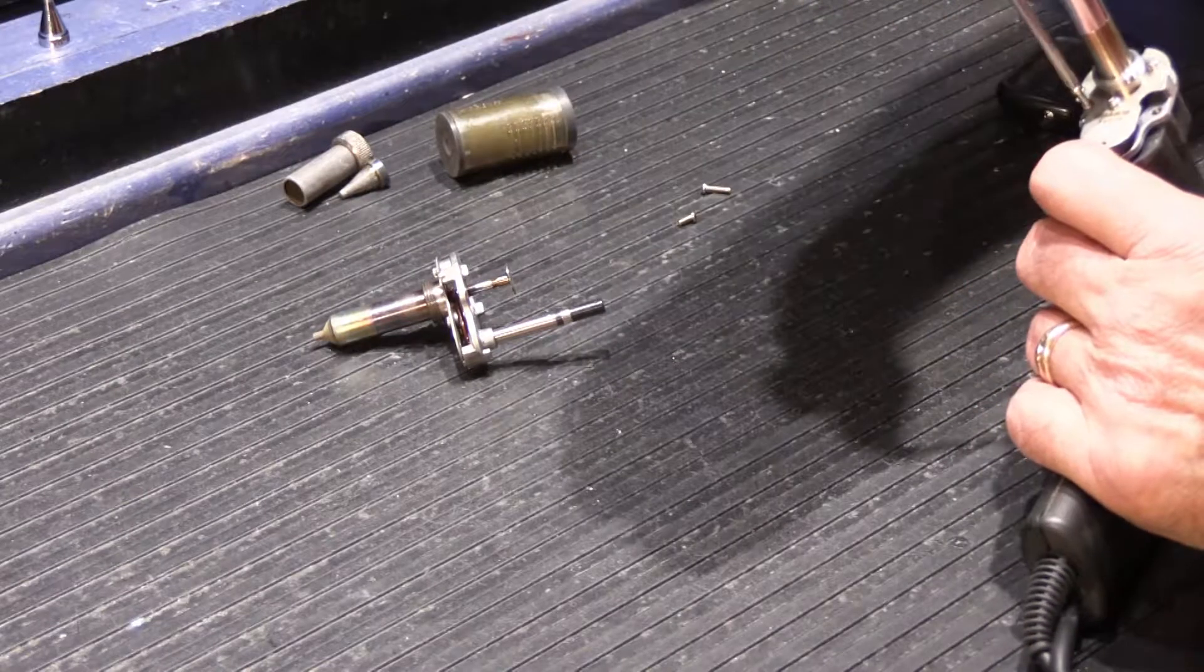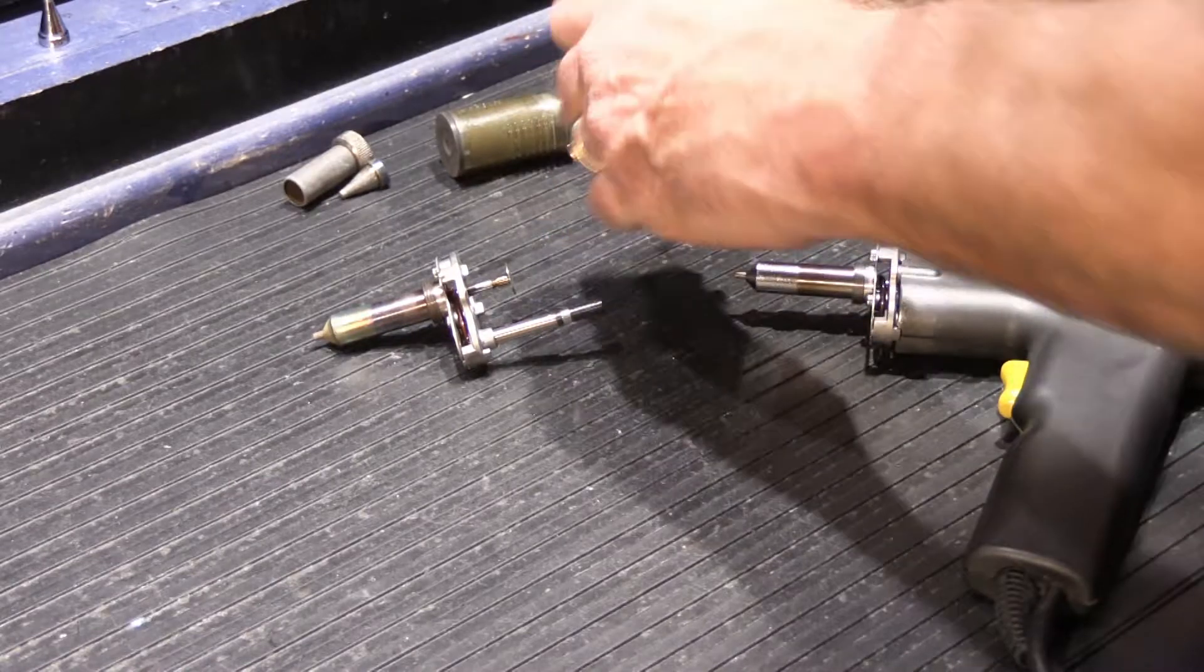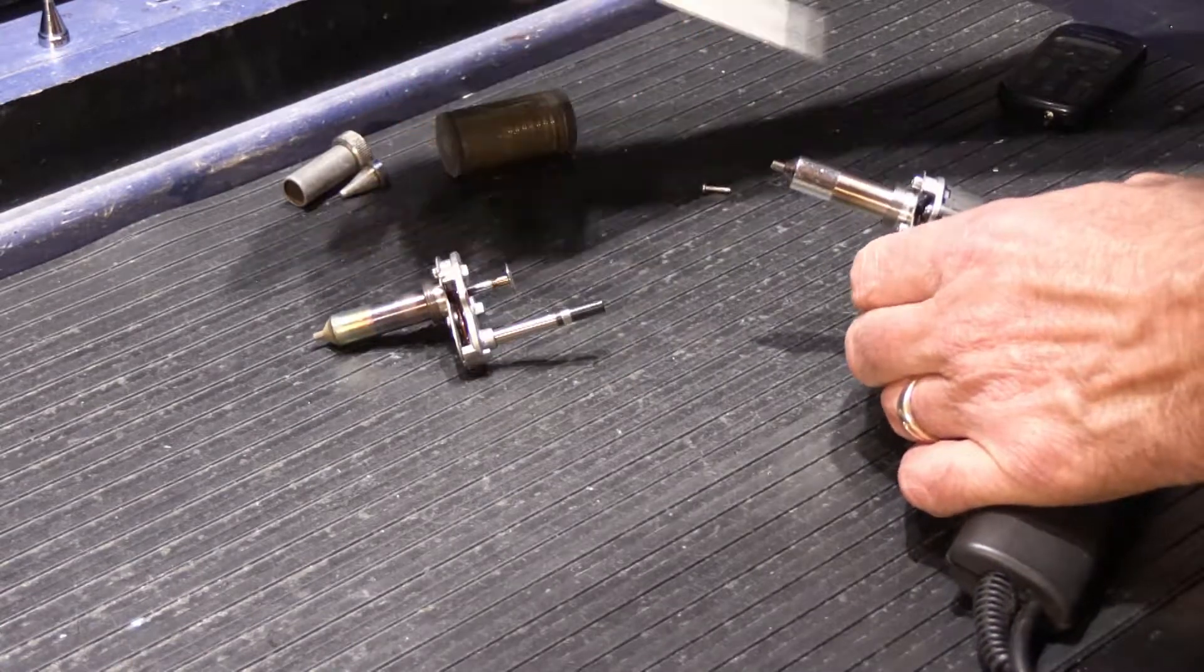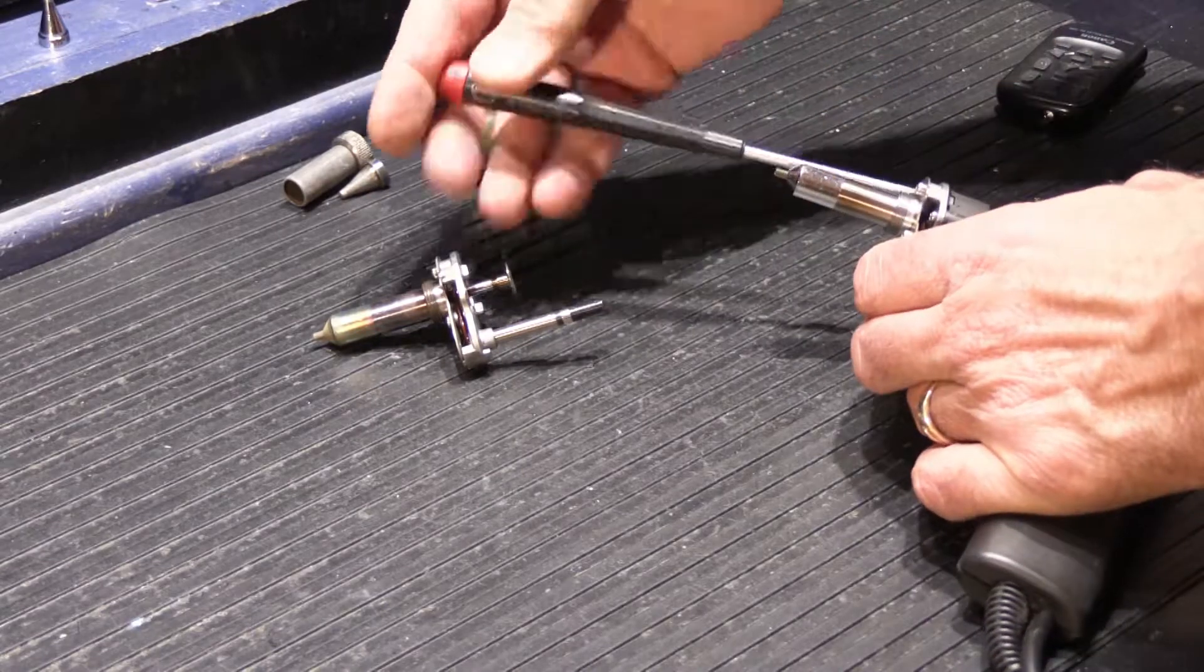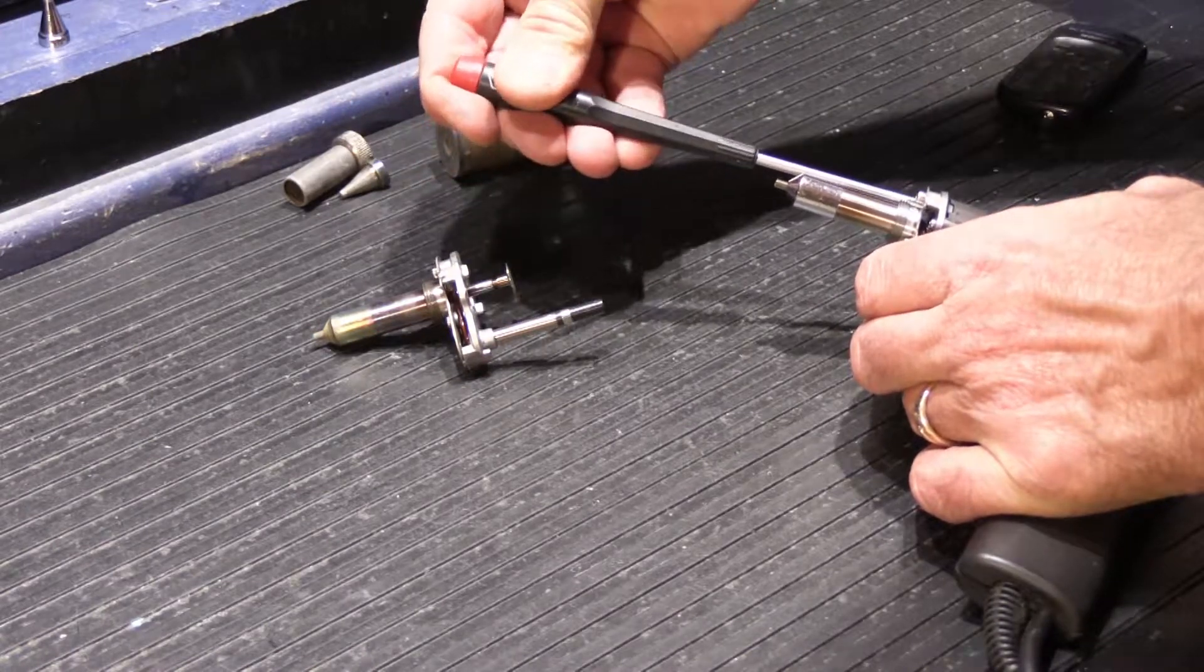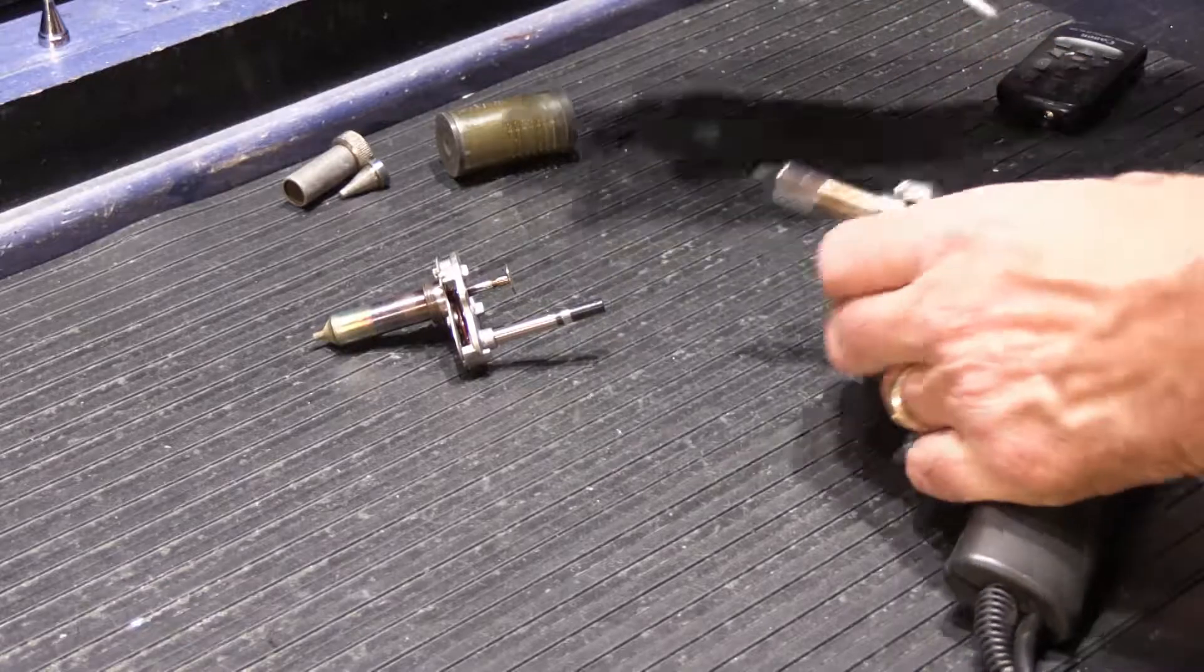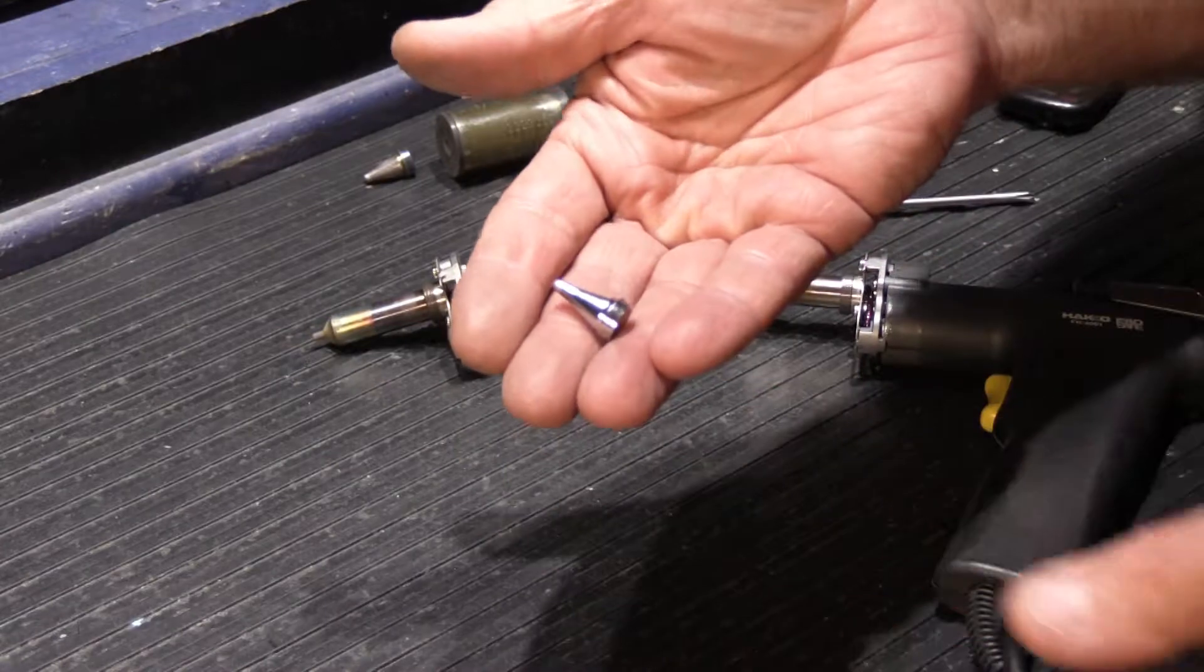The screws are two different lengths—two short ones that go on the sides and a longer one that goes in the top. You don't have to really wrench on these. They are machine screws and you're screwing them into the aluminum body of the handle. They're not self-tappers going into plastic, so just make sure they're all snug.